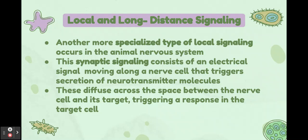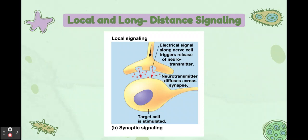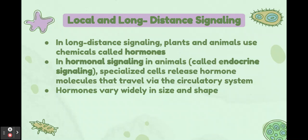Another more specialized type of local signaling occurs in the animal nervous system. Synaptic signaling consists of an electrical signal moving along a nerve cell that triggers secretion of neurotransmitter molecules. These diffuse across the space between the nerve cell and its target, triggering a response in the target cell. Essentially, a nerve cell releases neurotransmitters into a synapse, which stimulates the target cell.